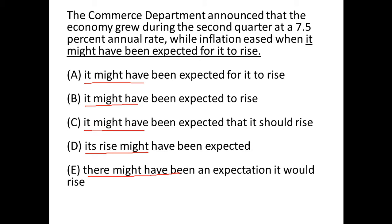Now, 'there might have been' is an avoidable construction in GMAT, but we'll come back to this option later. Here, 'it' refers to inflation. It says inflation might have been expected to rise, which is fine, but option D says 'it's rise' — inflation's rise. So that doesn't make sense, and that will be out.